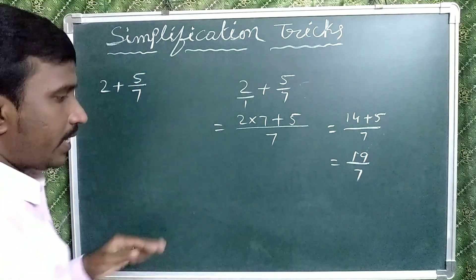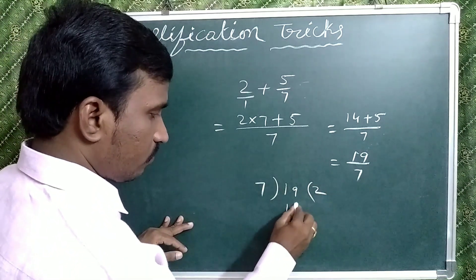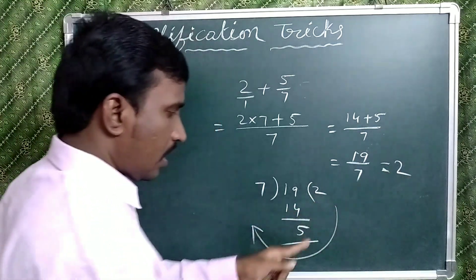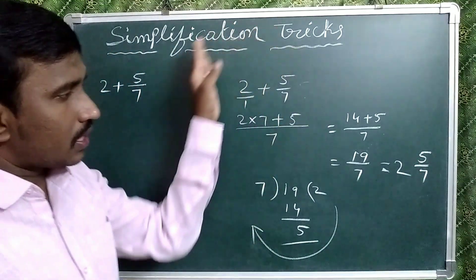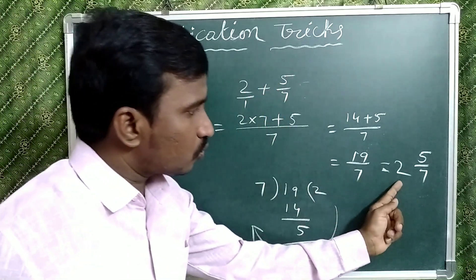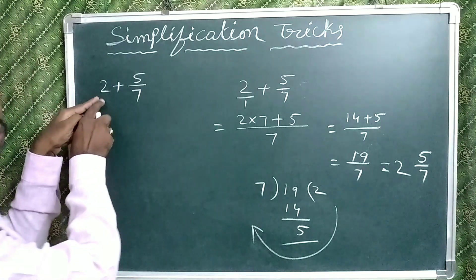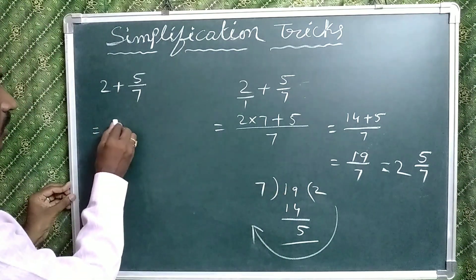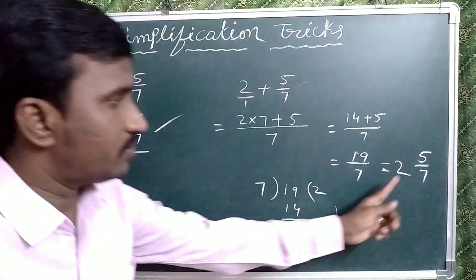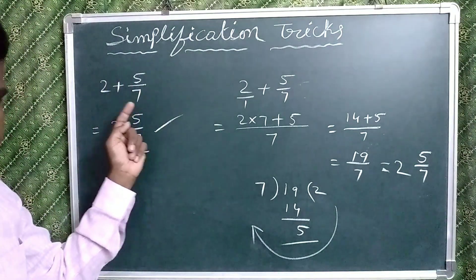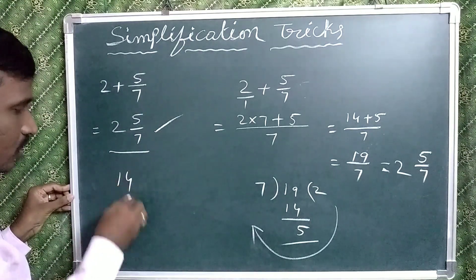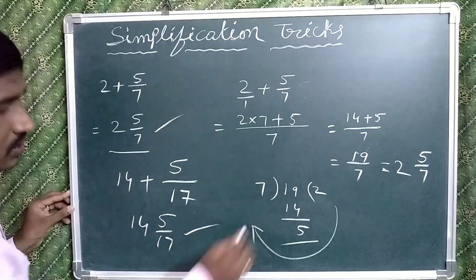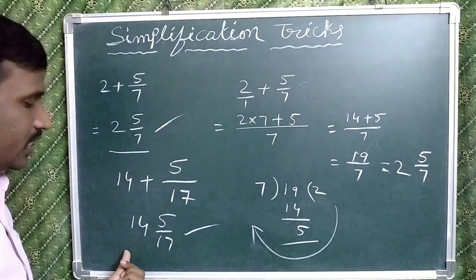Now write 19 by 7 as a mixed fraction. 19 divided by 7: 2 sevens are 14, remainder 5. So it can be written as 2 and 5 by 7. In our shortcut, for a whole number plus a proper fraction, simply remove the plus and write directly: 2 plus 5 by 7 is just 2 and 5 by 7. Take another example: 14 plus 5 by 17. The answer is simply 14 and 5 by 17.